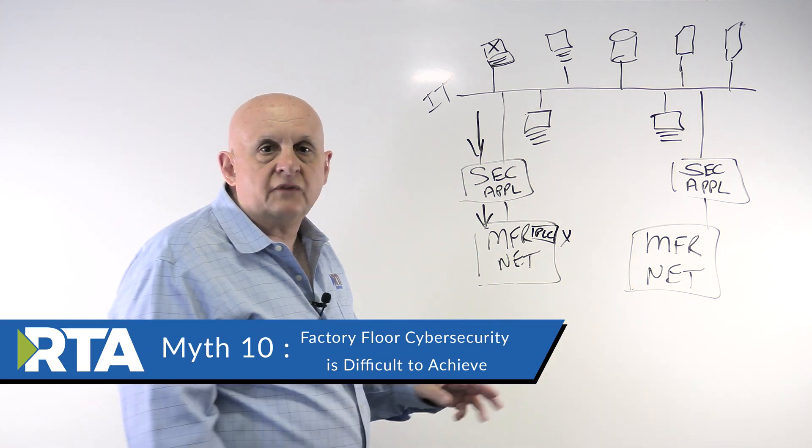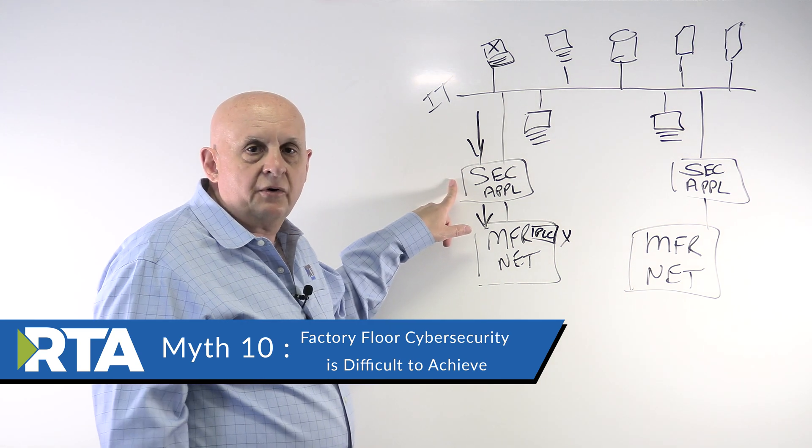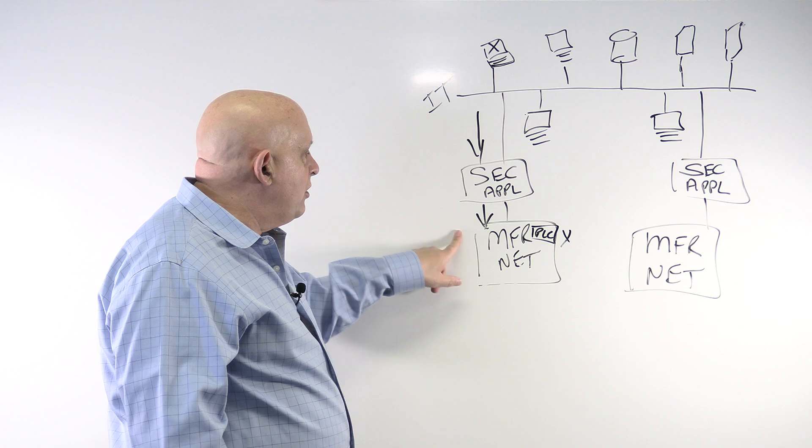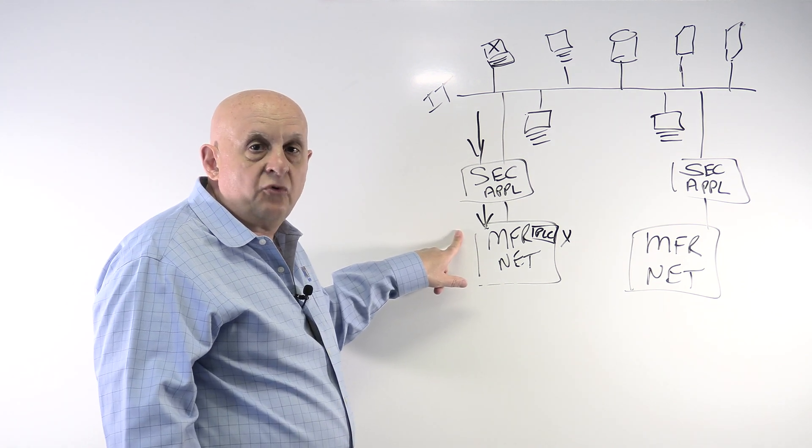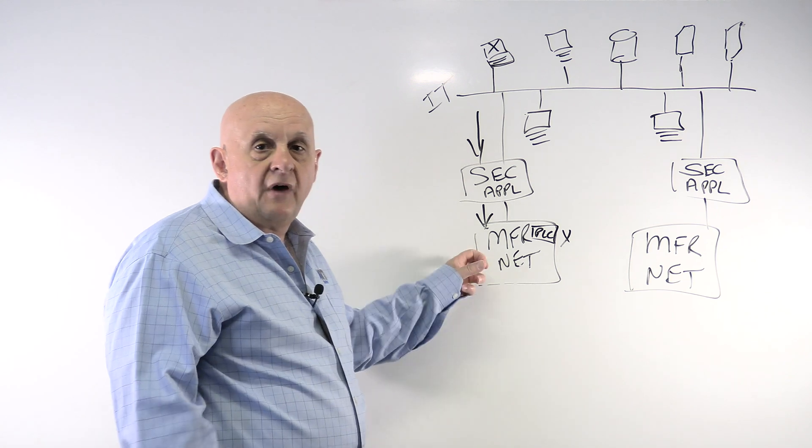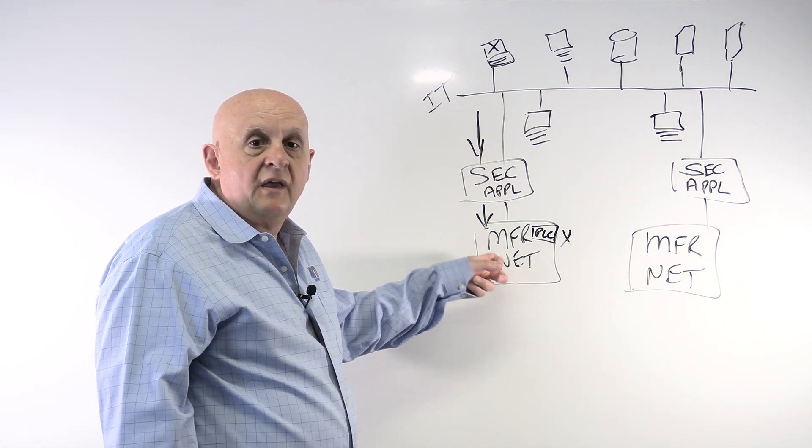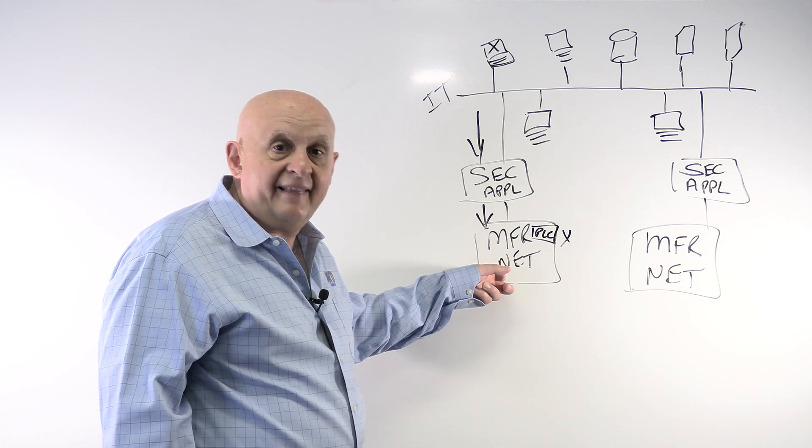Last one, factory floor security is difficult to achieve. Well, I just talked about that. If you get the right cybersecurity appliance that makes sure that these messages are the ones that you've authorized, then you'll be fine. You can get through there and you can protect your manufacturing system and you can continue to do things like lockdown.